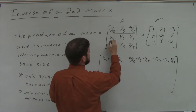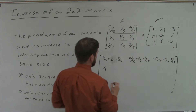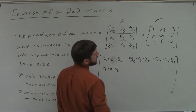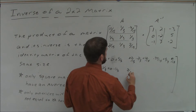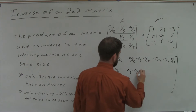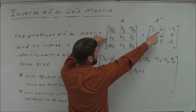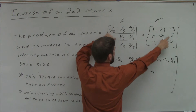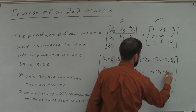For row 2, column 1: 1/3 times 1 is 1/3, 1/3 times 0 is 0, 1/3 times negative 1 is negative 1/3. For column 2: 1/3 times negative 2 is negative 2/3, and 1/3 times 3 is 1. For column 3: 1/3 times negative 3 is negative 1, 1/3 times 5 is 5/3, and 1/3 times negative 2 is negative 2/3.